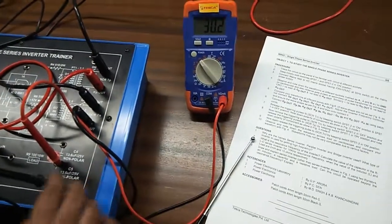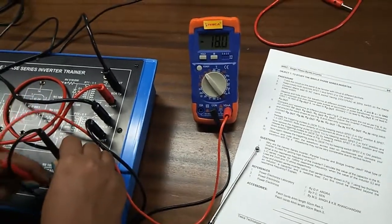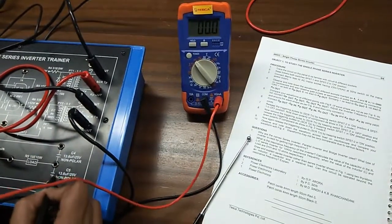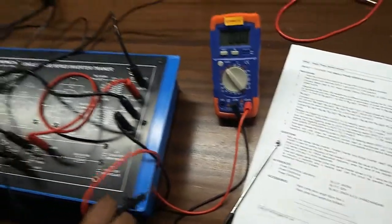We can see this one is positive and this one is negative. Change the terminal. Here this one is positive and this one is negative. Like this you can check the polarity of the other components.